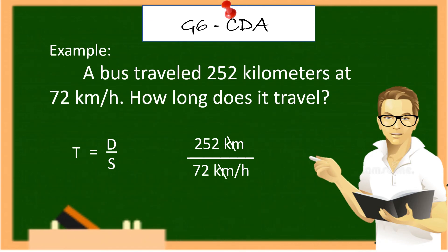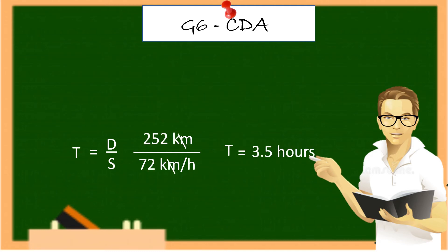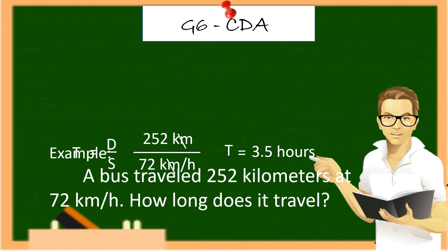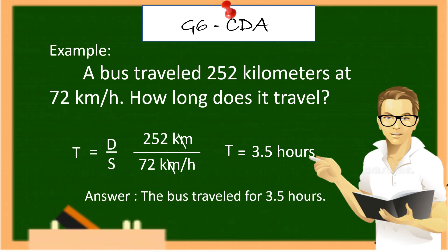T equals D over S. So 252 kilometers over 72 kilometers per hour. We just cancel the kilometer. And the answer is 3.5 hours. So the bus traveled for 3.5 hours.